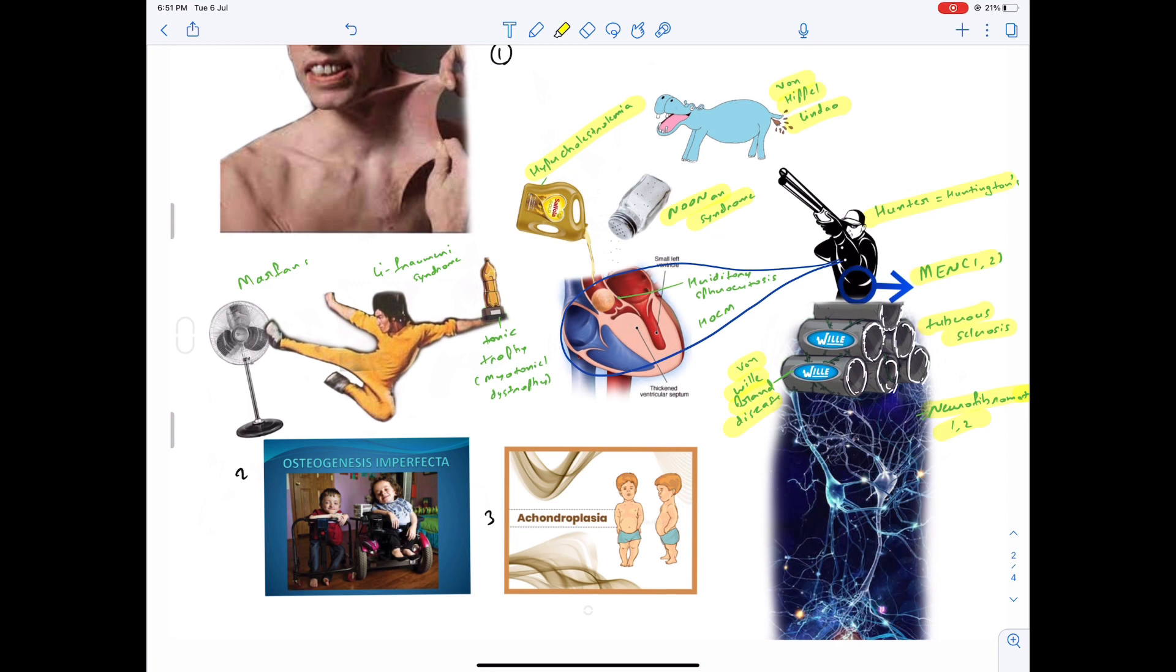Also, it can be seen that there is some outflow obstruction by a spherical ball, indicating hereditary spherocytosis. And we know where outflow obstruction occurs—that is HOCM.